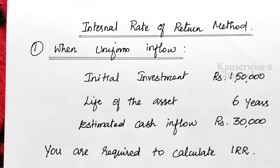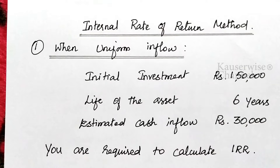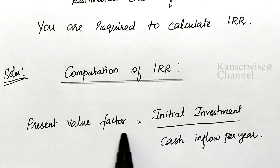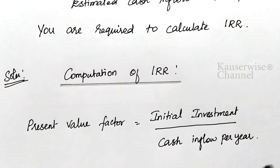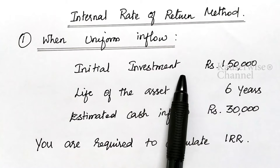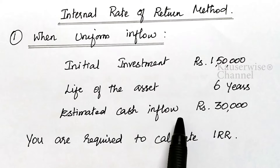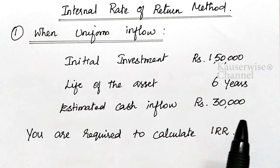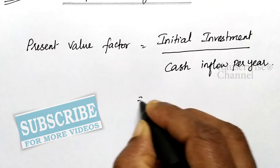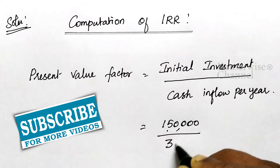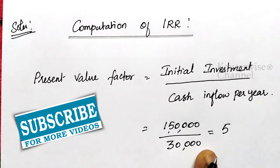There are two simple steps to find IRR. Step one: calculate the present value factor using the formula — initial investment divided by cash inflow per year. Initial investment is one lakh fifty thousand, and estimated cash inflow per year is thirty thousand. So: one lakh fifty thousand divided by thirty thousand gives a present value factor of five.